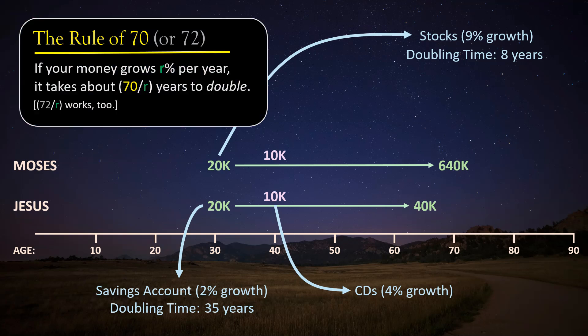Well, the rule of 70, or let's do 72, tells us that his doubling time will be about 72 over 4, which is 18 years. So when Jesus is 58, his 10,000 will have doubled to 20,000, and 18 years after that, when he's 76, and thus well into retirement age, it will have doubled again to 40,000 dollars. Again, not bad.